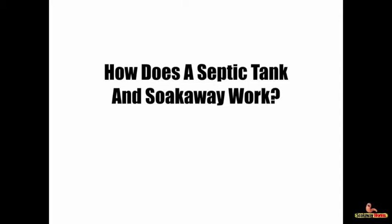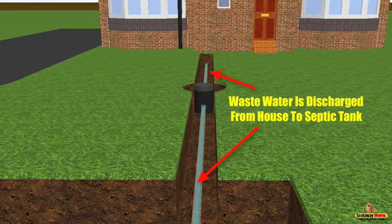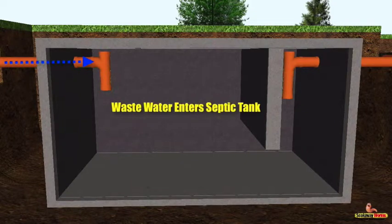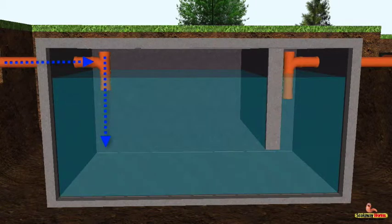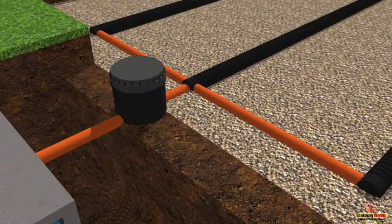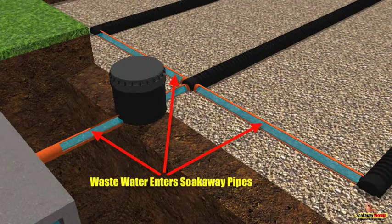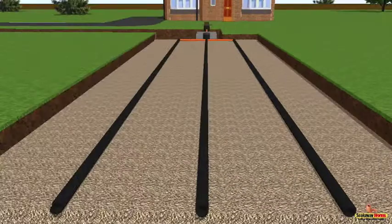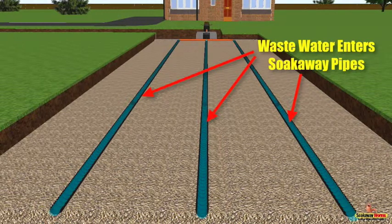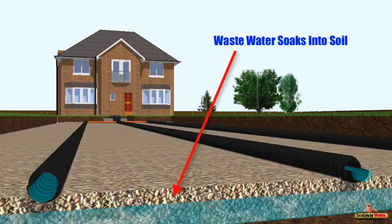So how does a septic tank and soak away work? Well, it's quite simple. Wastewater is discharged from a property towards the septic tank. The wastewater then enters the septic tank from the house, fills up, and then exits via the outlet pipe. It then leaves the septic tank and enters the soak away system, making its way through the soak away pipes, where it's slowly but naturally discharged into the gravel and soil.